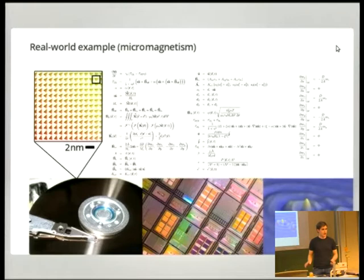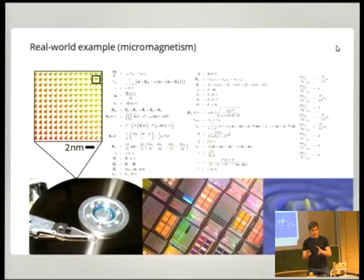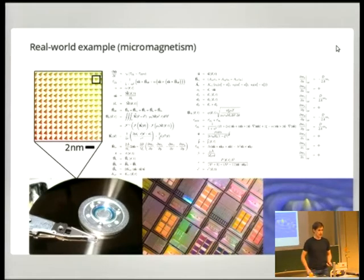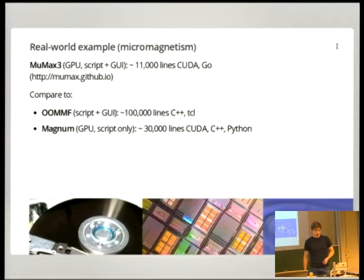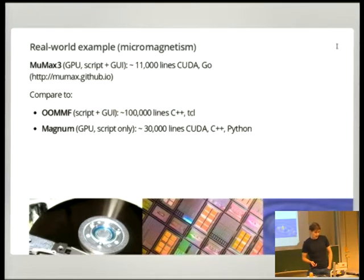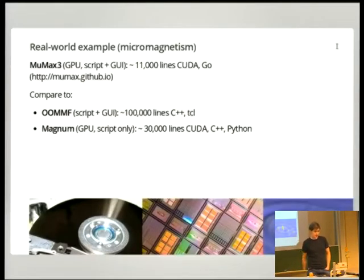That's the part we offload to the GPU. But typically the bottleneck is only 10% of your code and you still have 90% left for other stuff. We decided to try to write that in Go just for fun. Our implementation for this problem with CUDA and Go was only around 11,000 lines. Comparable programs doing basically the same thing use C++ together with a scripting language and require a multitude of those lines.